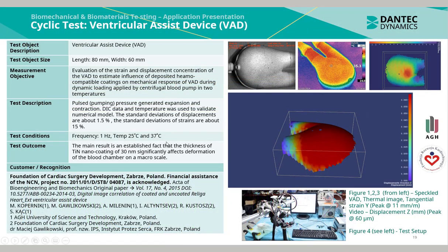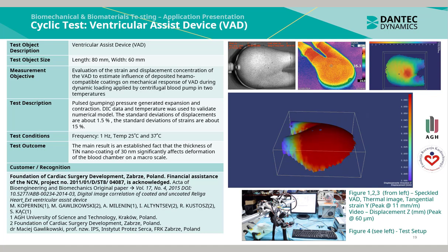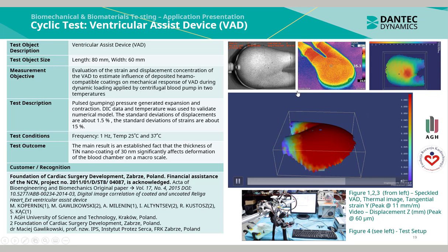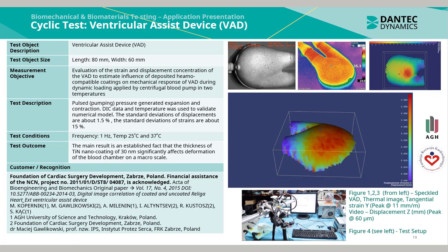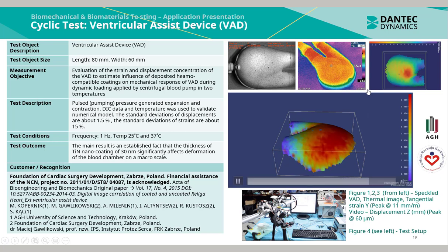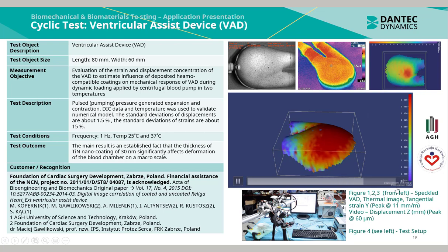This is a cyclic test of a ventricular assist device or VAD. The test object size is approximately 80 mm by 60 mm, and can be seen here in the speckled image of the camera acquisition measurement. Here is an infrared camera picture of the VAD in operation, with the visualization result showing the peak Z displacement at 60 micrometers.